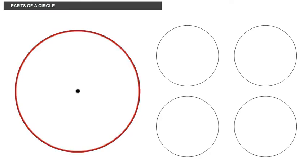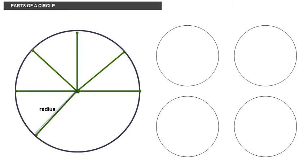The length of the path drawn is called the circumference and the line connecting the center to any point on the circumference is called the radius.